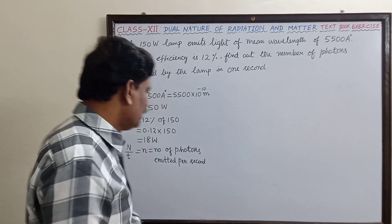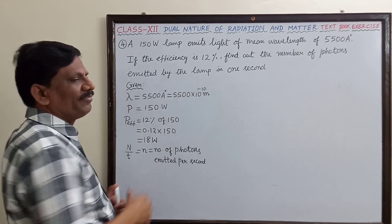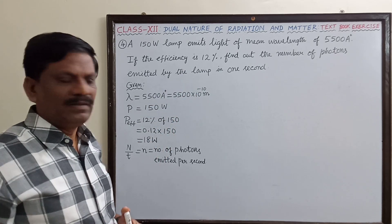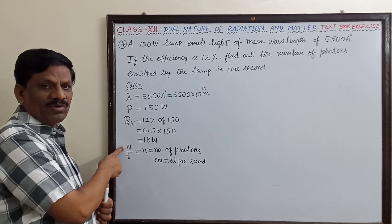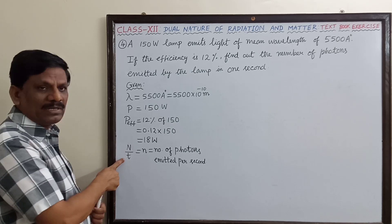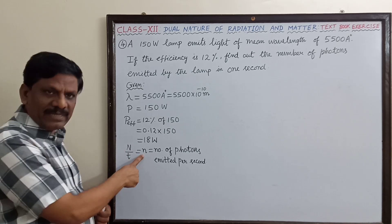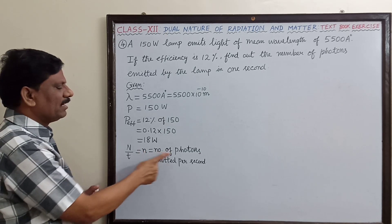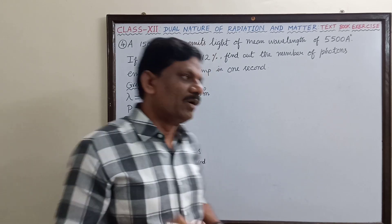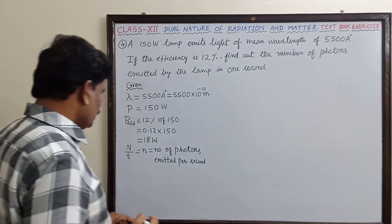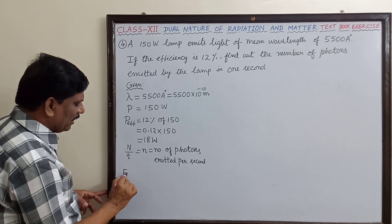We have to find the number of photons emitted per second. If capital N is the total number of photons emitted and t is the total time, then N divided by t is denoted by small n, where small n is called the number of photons emitted per second. We will first find the energy of a single photon.